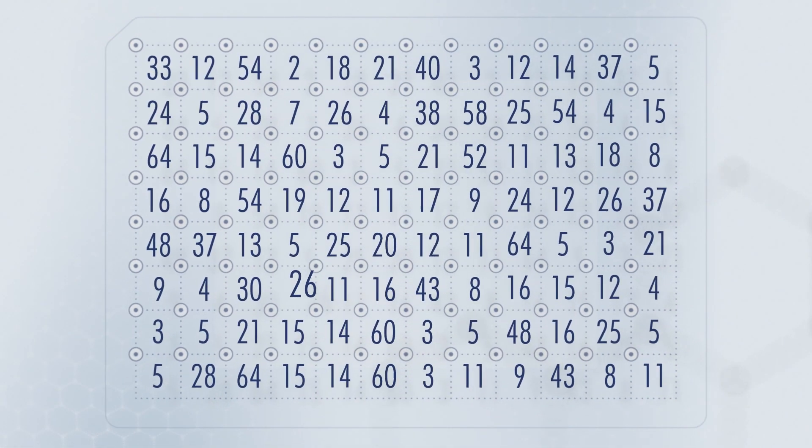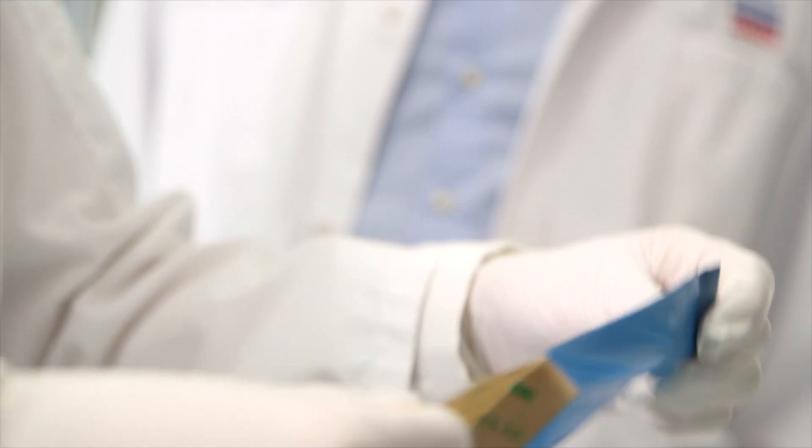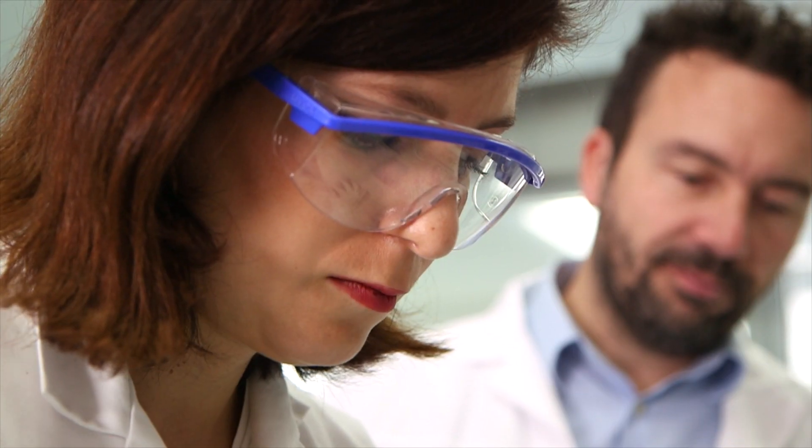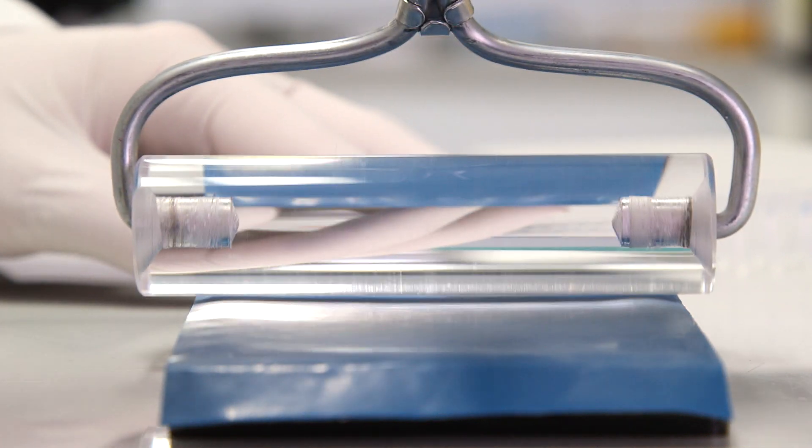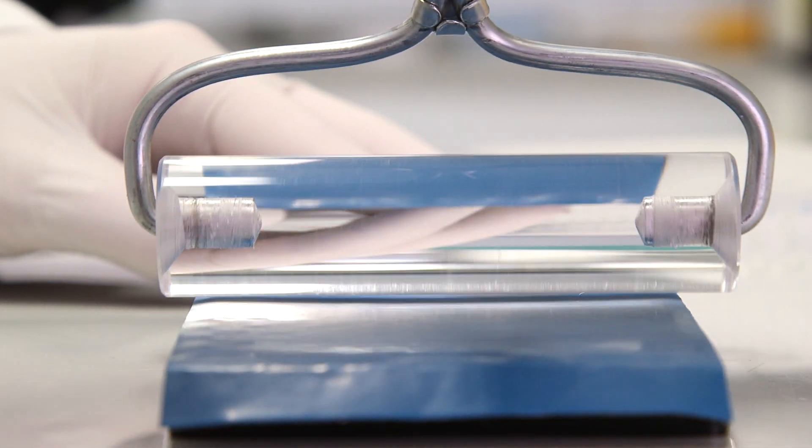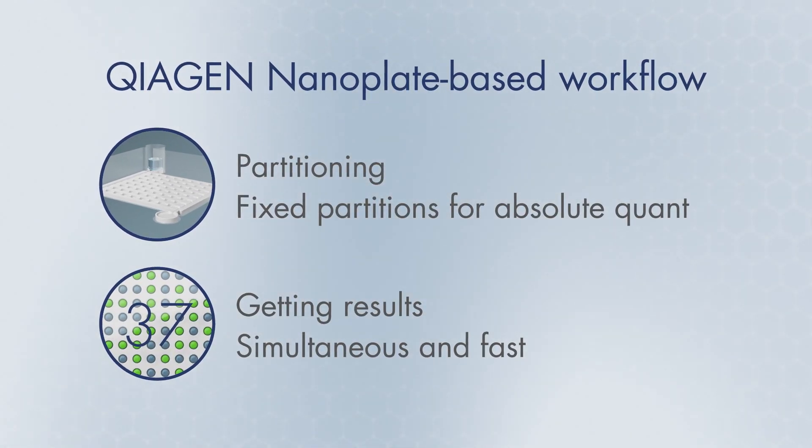In digital PCR we use plates that are very similar to qPCR. Depending on the sensitivity of the reactions that we set up, we can use either 96-well plates or 24-well plates. The number of partitions in 24-well plates are increased in comparison to 96-well plates, which allows also increased sensitivity of the detection.